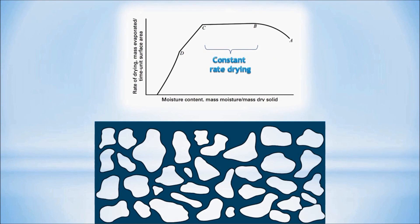The drying rate now becomes constant from period B to C, which prevails as long as free moisture covers the exposed surface. This period is the one that we are interested with. During this period, the rate of drying is controlled by external mass and heat transfer between the exposed surface of the wet solid and bulk gas. This period terminates at point C, which is called the critical moisture content.